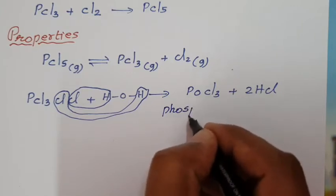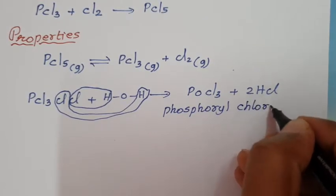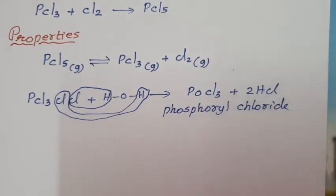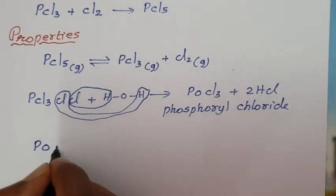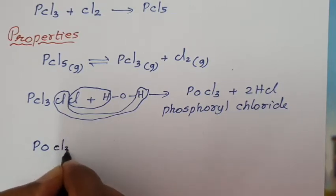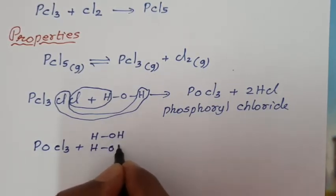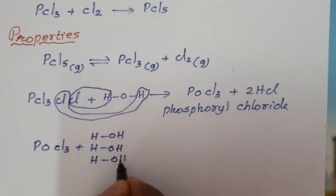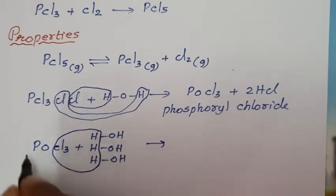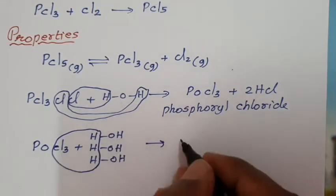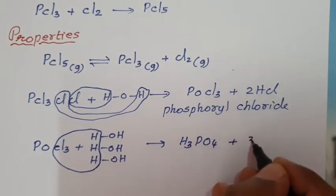This gives POCl₃ with the loss of two molecules of HCl. This compound is called phosphoryl chloride (POCl₃). Then, POCl₃ treated with three more molecules of H₂O — all the chlorine atoms are replaced by OH groups, giving H₃PO₄ (orthophosphoric acid) with the loss of 3HCl.